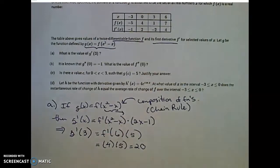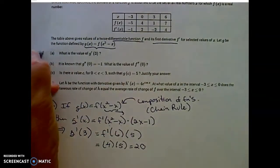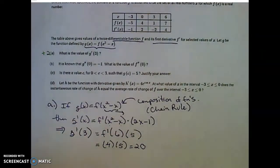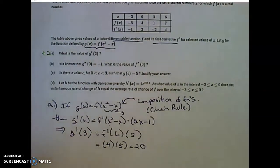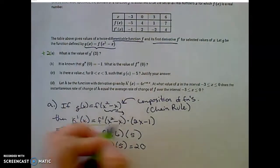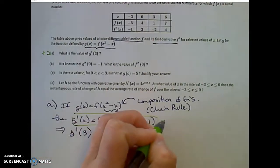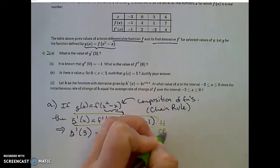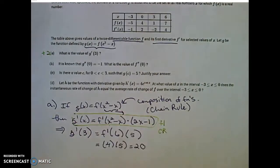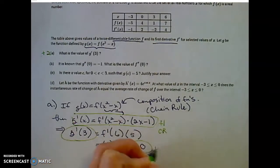Let's look at point totals for part A. Part A is a two-point part of this question. You earned one point for a correct chain rule, and one point for the correct answer g prime of 3, for two points total.